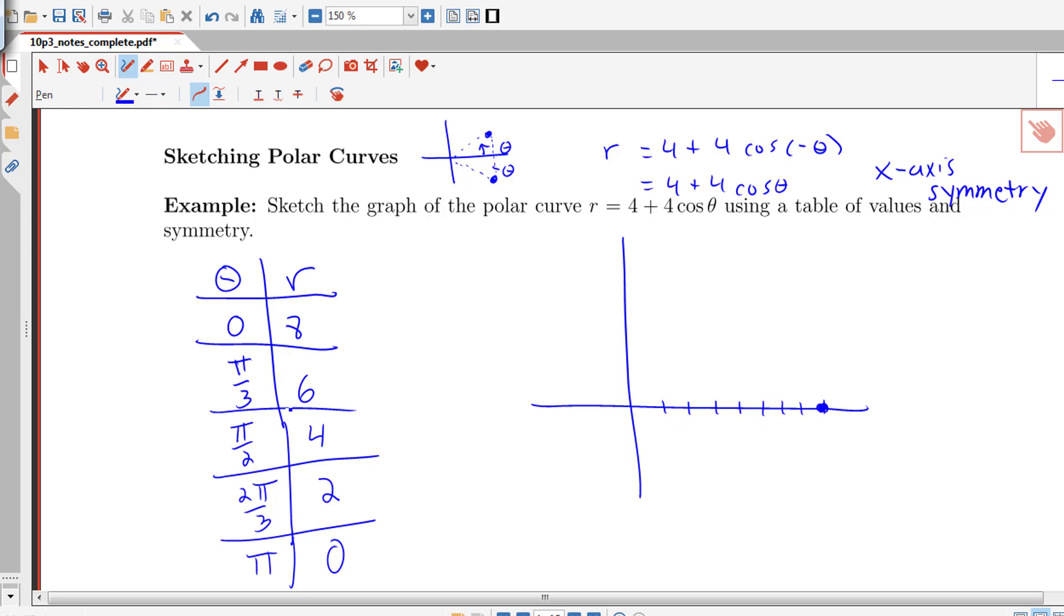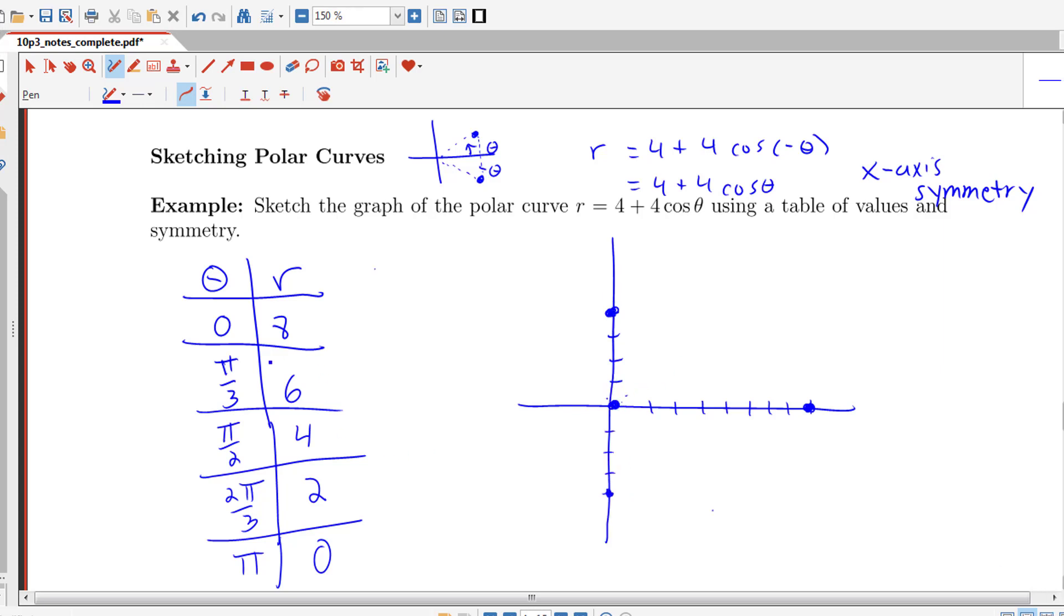Then I have this point of pi thirds, 6. Pi halves 4, let's do that one next. Pi halves is right here along our y-axis, but we're out a distance of 4. Let's save the pi thirds and 2 pi thirds for last. Pi is a 0, that means I'm going to make an angle of pi, but I have no distance. The radius is 0, so that's at the origin.